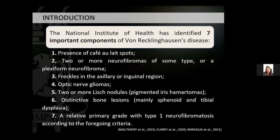The National Institute of Health has identified seven important components of von Recklinghausen disease: 1, presence of café-au-lait spots; 2, two or more cutaneous neurofibromas or more than one plexiform neurofibroma; 3, freckling in the axillary or inguinal region; 4, optic nerve glioma; 5, two or more Lisch nodules (pigmented iris hamartomas); 6, distinctive bone lesion, mainly sphenoid and tibial dysplasia; 7, a first-degree relative with type 1 neurofibromatosis. If the patient has at least two of these criteria, he or she is diagnosed as having von Recklinghausen disease.